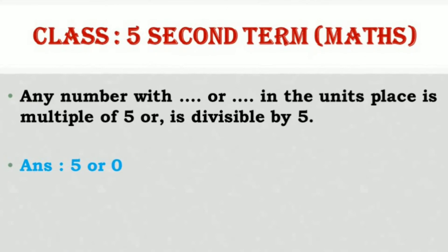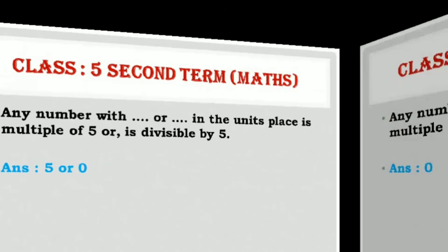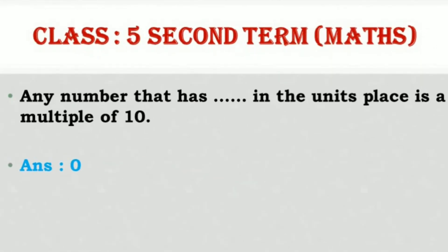Any number with 5 or 0 in the units place is a multiple of 5, or is divisible by 5. Any number that has 0 in the units place is a multiple of 10.